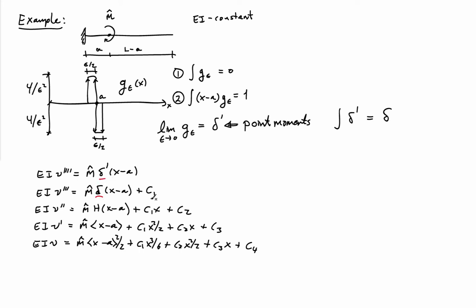We integrate the delta function, we get the step function and pick up another constant. We integrate that one time, we'll pick up the Macaulay bracket. And if we integrate again, we'll get the Macaulay bracket squared. We've picked up four constants of integration, C1, C2, C3, and C4, and we have to eliminate those with the boundary conditions. So we need the boundary conditions for a cantilevered beam.